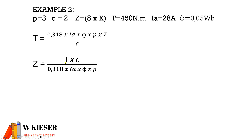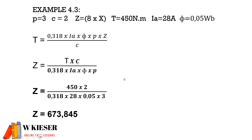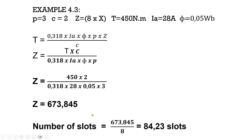So therefore Z will be the torque in newton meters multiplied by the number of parallel paths, divided by 0.318, the armature current, the flux per pole in Weber, and the number of pole pairs. If you substitute all those values in, you end up with a total number of armature conductors of 673.845. To determine the number of slots, we take the total number of armature conductors and divide by the number of conductors per slot, giving this machine 84.23 slots.